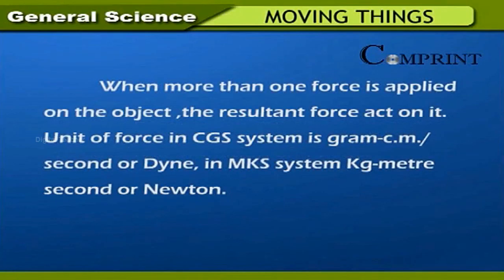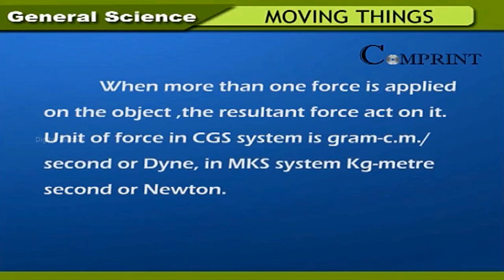When more than one force is applied on an object, the resultant force acts on it. The unit of force in the CGS system is gram centimeter per second squared, or dyne. In the MKS system, it is kilogram meter per second squared, or Newton.